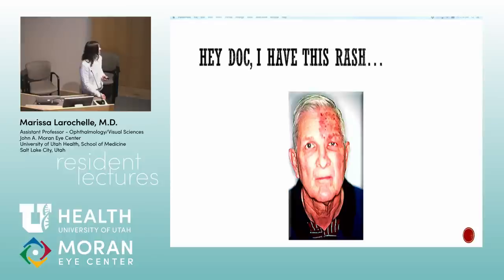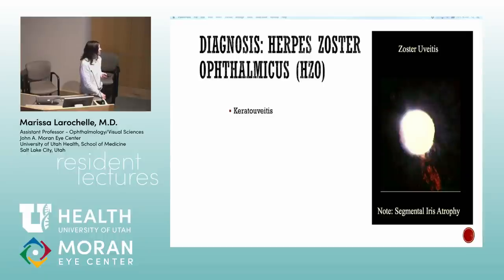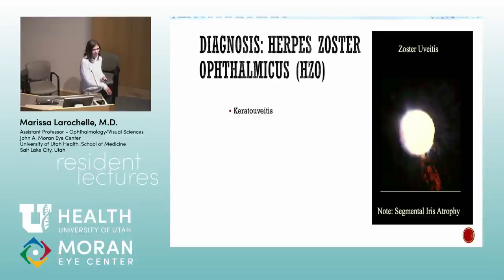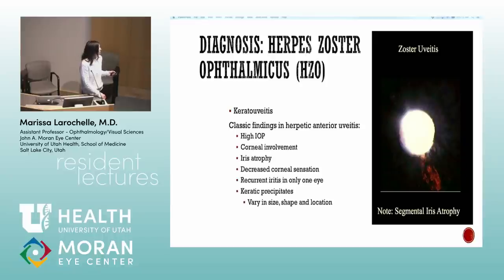If the patient also has a dermatomal rash, you know it's zoster. Zoster can produce any kind of corneal change — dendrites, pseudodendrites, or endothelitis. If I see anterior uveitis with pretty much any corneal swelling — Descemet's membrane folds — I think zoster or HSV. Classic features are segmental iris atrophy, high IOP, and decreased corneal sensation. KPs can vary.